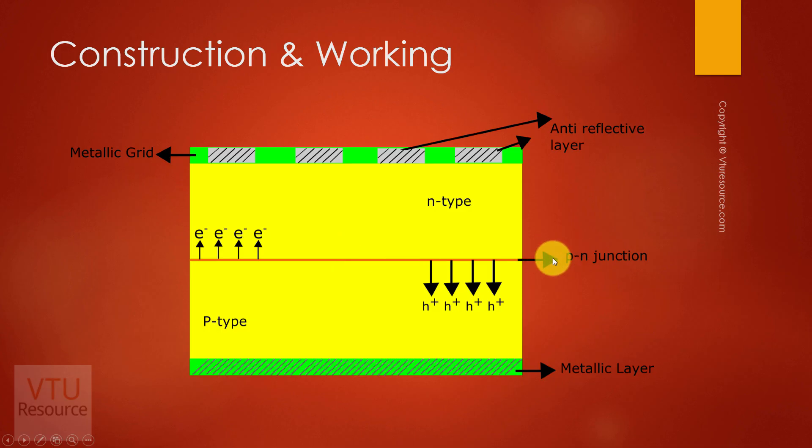Anti-reflective layer, that is silver nitrate, is coated in between the metallic grid. This anti-reflective layer allows the light to be completely absorbed, that is it prevents the light from reflecting and allows the maximum amount of light to fall on the PN junction. That is, it increases light transmitted onto the semiconductor.